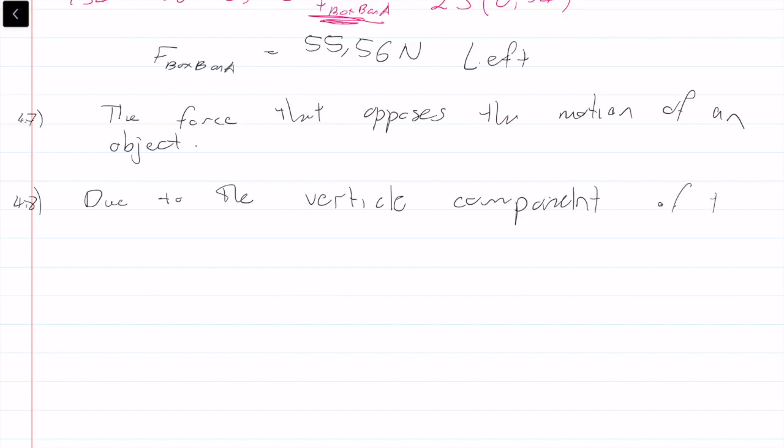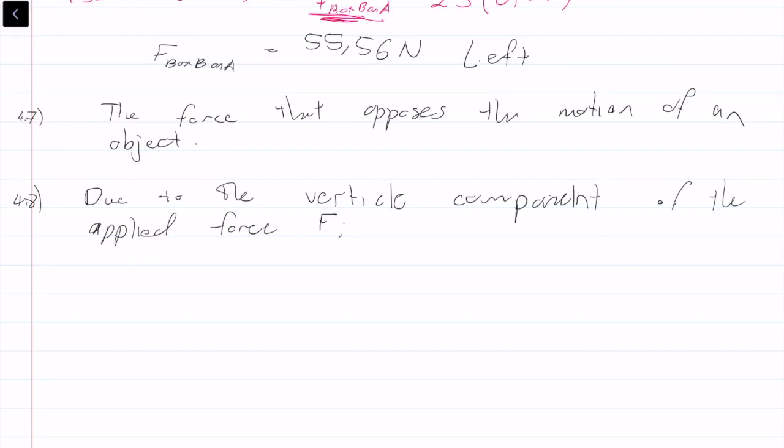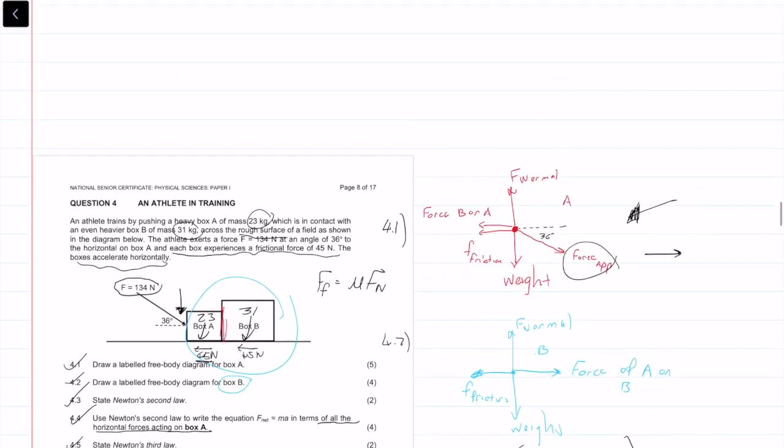If I wanted to explain it, we can say that box A experiences the same as box B, even though they have different weights, is due to the vertical component of the applied force F. Basically, force friction is equal to mu times F_n, where F_n is greater due to the vertical component. That's that, we'll get ourselves three marks for that.